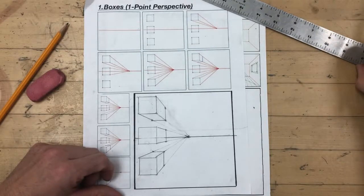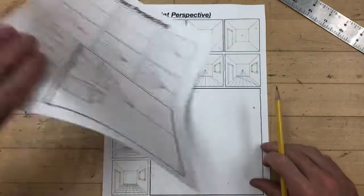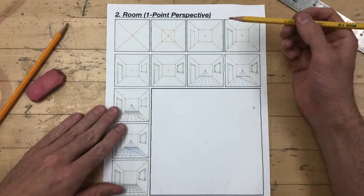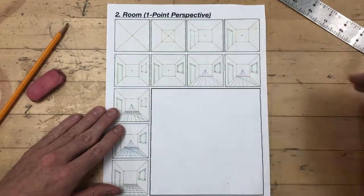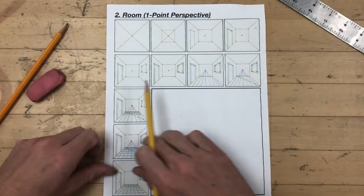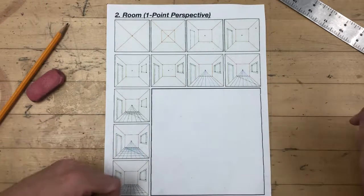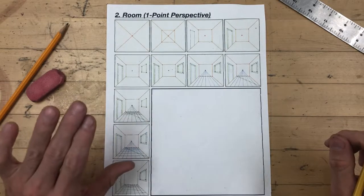The next lesson is the one-point linear perspective room. Usually I would start a perspective drawing by drawing in a horizon line and establishing a vanishing point, but we're going to do things a little bit differently this time.